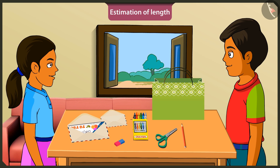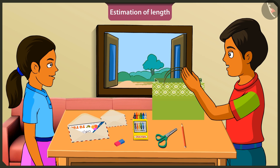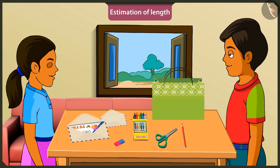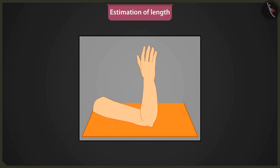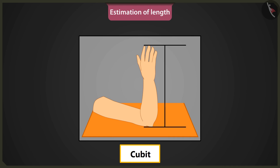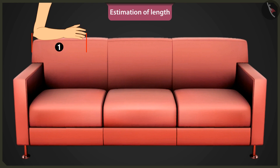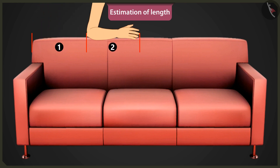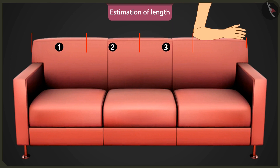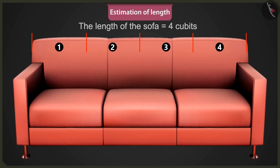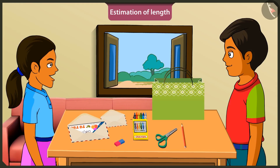Mintu, now I will teach you how to measure by making your arm length a unit. Can we use it to measure this sofa? Yes, look — this is one arm's length, this is two arms, three arms, this is four arm's length. So the length of this sofa is equal to four cubits. Wow, brother — you even measured the sofa!